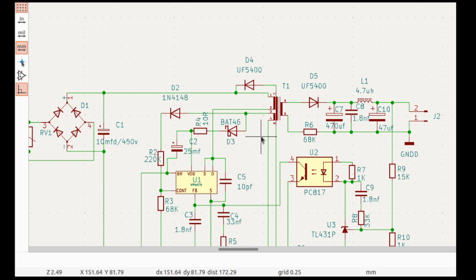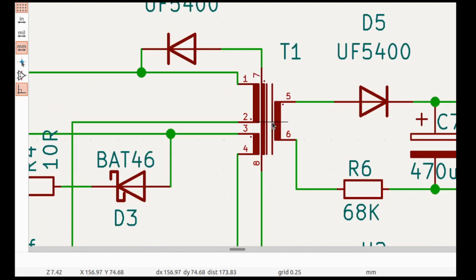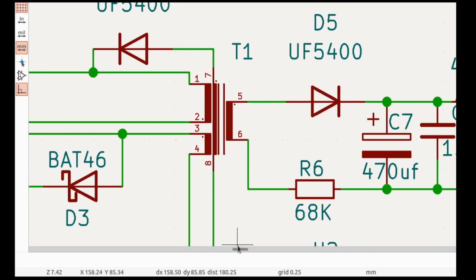So at that time, a magnetic field develops in this core. When this IC goes off, that means the total charge through these three coils goes to secondary.